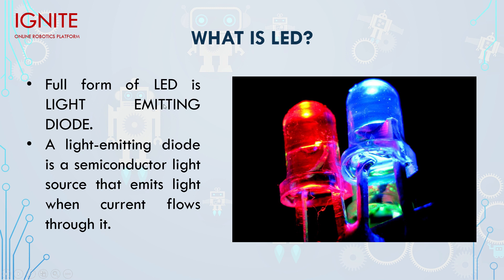A light emitting diode is a semiconductor light source that emits light when current is flowing. So when you connect a battery to an LED, current flows through it, and that is the reason it glows — that's why we see the light. This is basically called an LED.